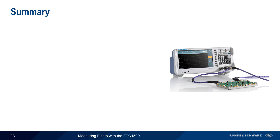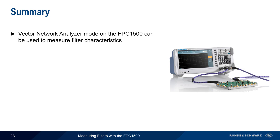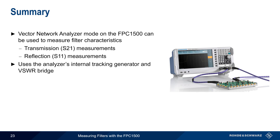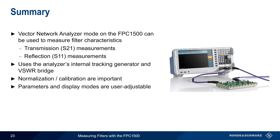Let's end with a brief summary. Vector Network Analyzer mode on the Rohde & Schwarz FPC-1500 spectrum analyzer can be used to measure filter characteristics, including both transmission or S21 measurements, as well as reflection or S11 measurements. These are made by using the analyzer's internal tracking generator and VISWAR bridge, so no additional external devices are needed. However, it's important to perform a normalization or calibration before making measurements, and these require either manually attached calibration standards or an automatic calibration unit. Measurement parameters and display modes are user adjustable, and filter characteristics such as frequency, bandwidth, attenuation, and ripple can all be easily measured using markers.